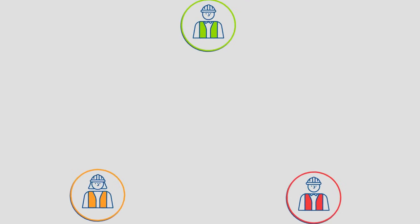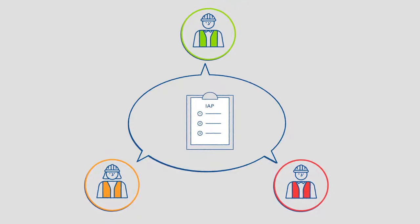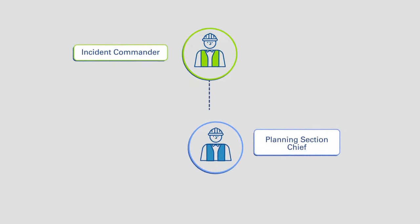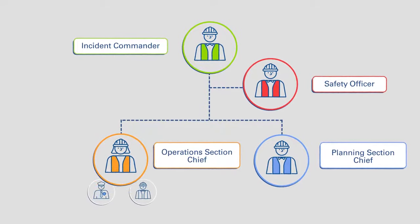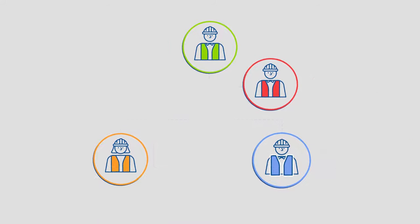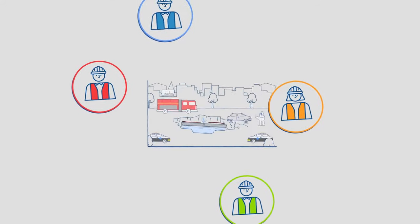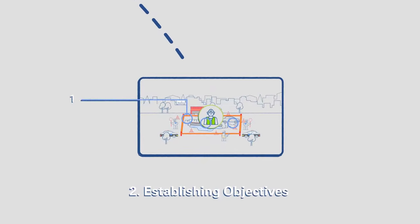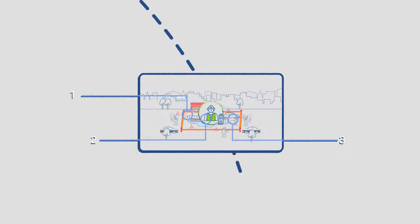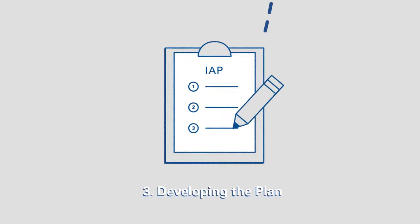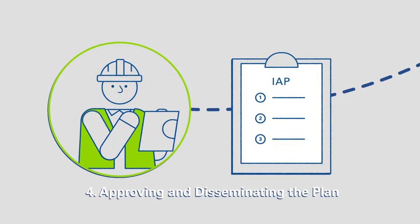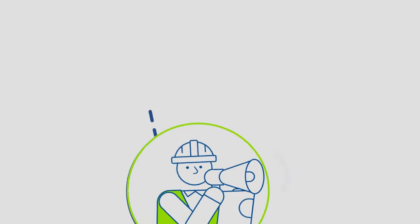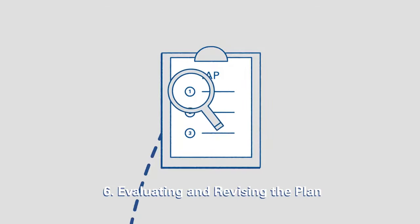The action plan is developed in a collaborative way during the planning process. The Incident Commander decides to appoint a planning section chief, who ensures that the action planning process occurs. This person wears a blue vest. The action planning process includes: 1. Understanding the situation; 2. Establishing incident objectives; 3. Developing the plan; 4. Approving and disseminating the plan; 5. Executing the plan; 6. Evaluating and revising the plan.